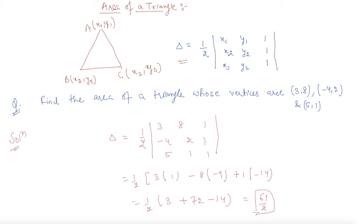So this is the area of this triangle whose coordinates are (3, 8), (-4, 2), and (5, 1).